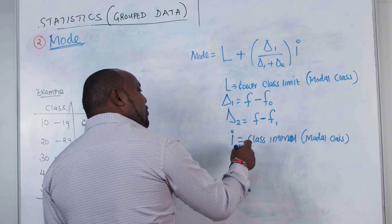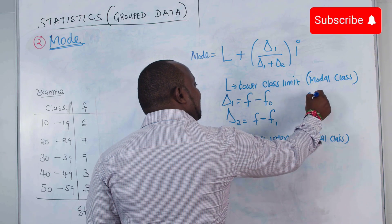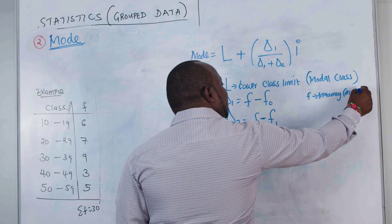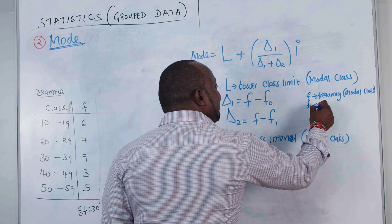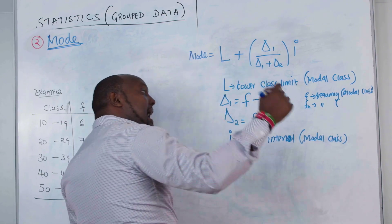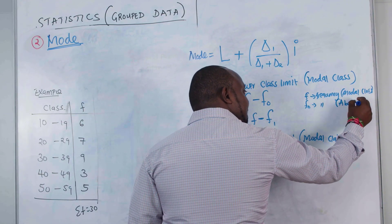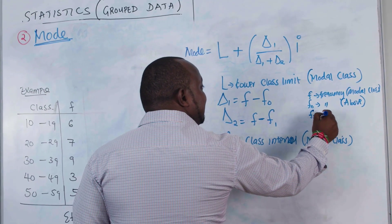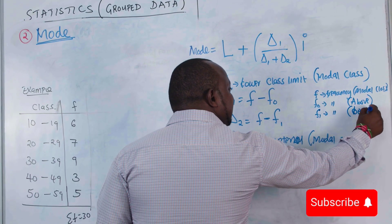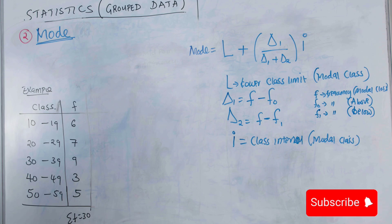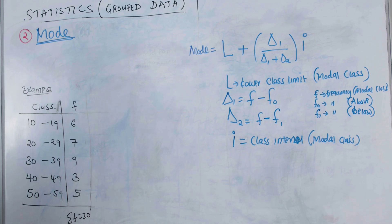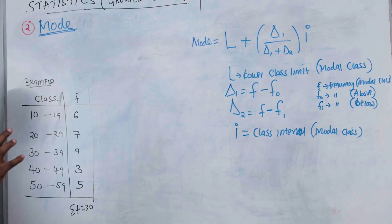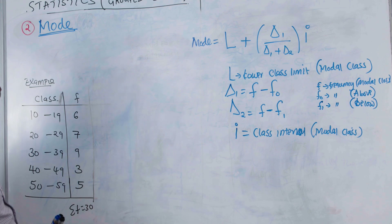Here, f is the frequency of the modal class, f₀ is the frequency of the class above (the previous class before the modal class), and f₁ is the frequency of the class below. The first thing you need to do is identify the modal class.